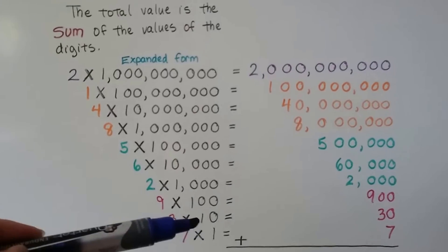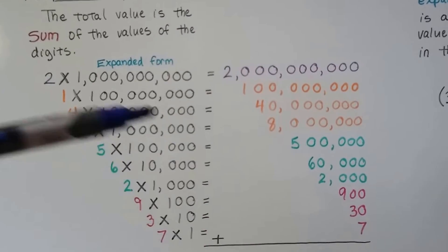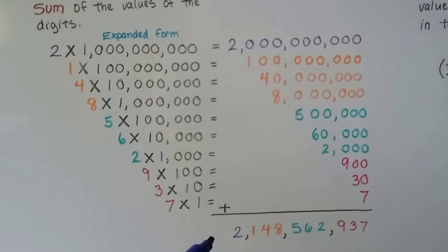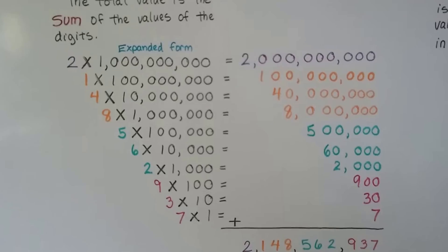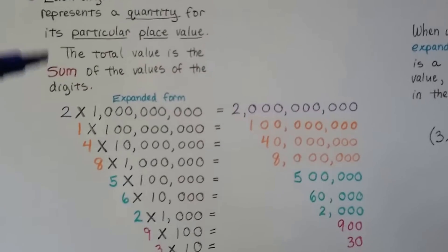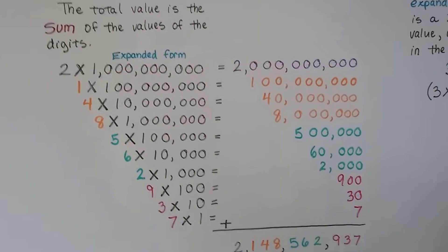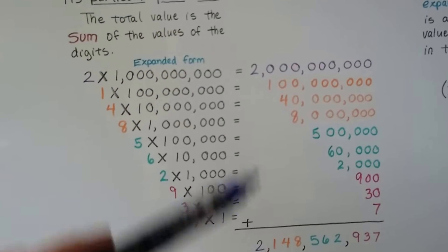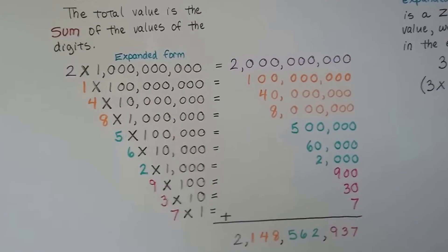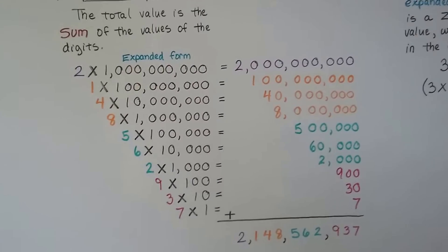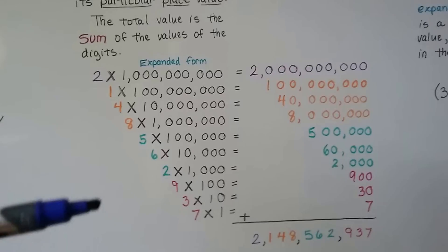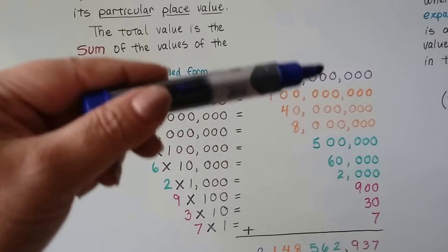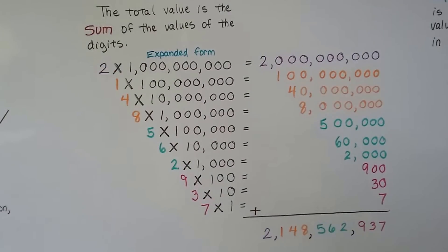Once these are in expanded form, we can take all of these and add them up to get a sum that brings us back to our standard form. That's all it's saying — the total value is the sum of the values of the digits. These are the values of the digits; that's the sum of the values of the digits. This is written in expanded form — they were multiplied, we got a product, and then we added up all the products to get a sum.